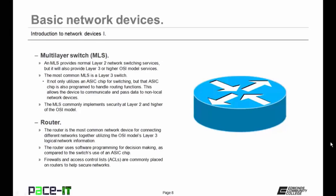Then we have the multi-layer switch, or the MLS. An MLS provides normal Layer 2 network switching services, but it will also provide Layer 3 or higher OSI model services. The most common MLS is called a Layer 3 switch. It not only utilizes an ASIC chip for switching, but that ASIC chip is also programmed to handle routing functions. This allows the device to communicate and pass data to non-local network devices. The MLS commonly implements security at Layer 2 and higher of the OSI model. MLSs are not very common in small networks due to their expense.